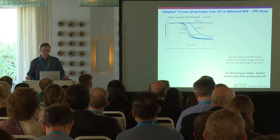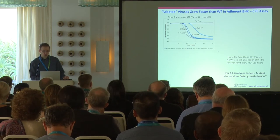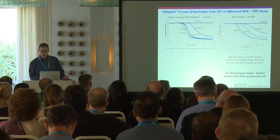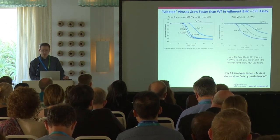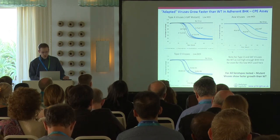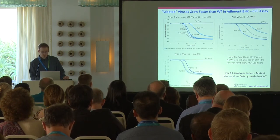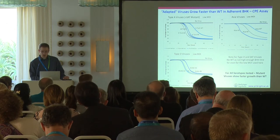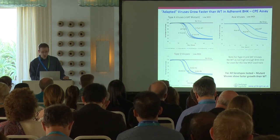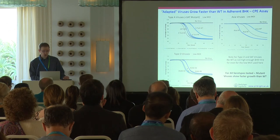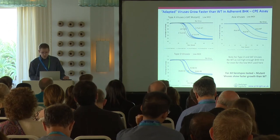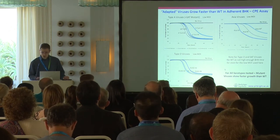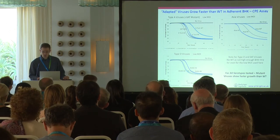For the type A viruses, the mutants show much quicker development of CPE than the wild type. Similarly, for Asia, the wild type is slowest, KK is faster, and HS faster still. For the type O's, we couldn't compare directly with the wild type because it grows so poorly in BHK cells that you can't even get a low MOI infection. However, the KK and RK viruses grew faster than the HS variant. The take-home message is that for all the serotypes tested, the mutant viruses show faster growth than the wild type in terms of CPE development.